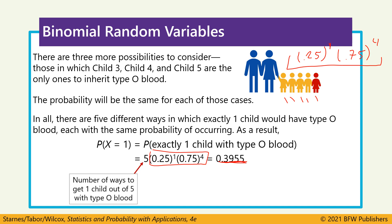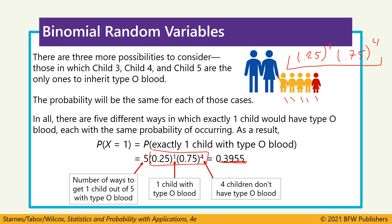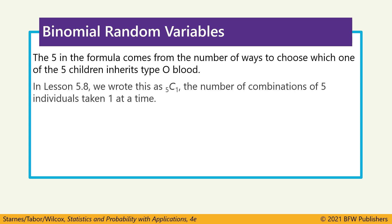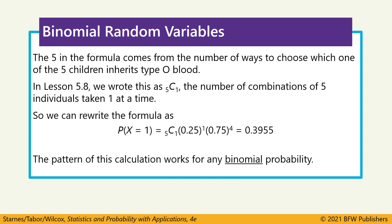That five out front is the number of different ways we can get one child out of five with type O blood. We have one child with type O blood and four without. That five is actually the number of combinations for selecting one child from a group of five — 5C1 — which we covered back in chapter five. It's a combination rather than a permutation because the order doesn't matter. This is multiplied by the probability of one success and four failures.